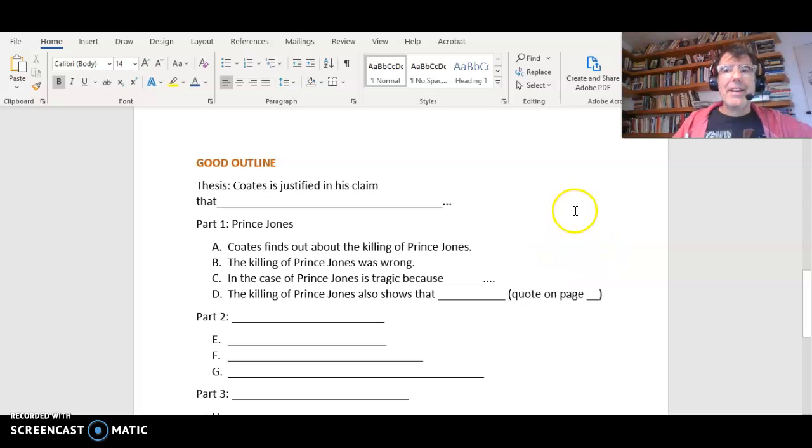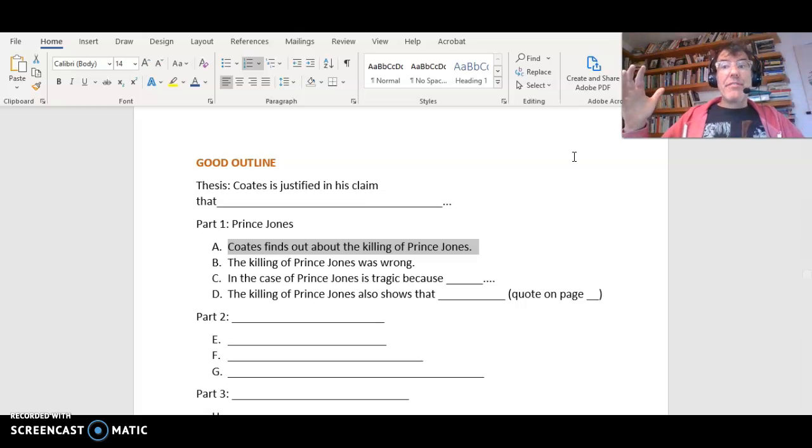Let's look at this one. Same topic: Coates is justified in his claim that... So let's say your part one is gonna be about Prince Jones. These are better topic sentences. Each one of these is a paragraph, a whole paragraph. Part one isn't one paragraph - it might be like three pages of the essay.